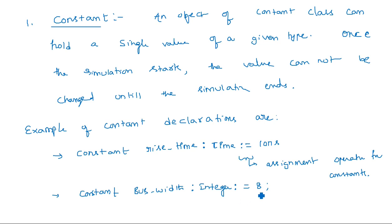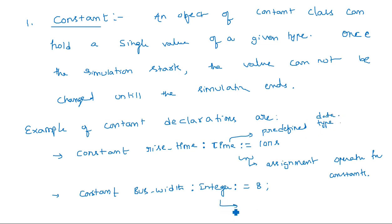Here, the value is integer type and its value is equal to 8. 'Time' is a predefined data type in VHDL - whenever you say time, it reads values only in terms of seconds, such as 10 nanoseconds or 1 nanosecond. Similarly, 'integer' is a predefined data type that takes only integer values. These are the declaration examples of constants.